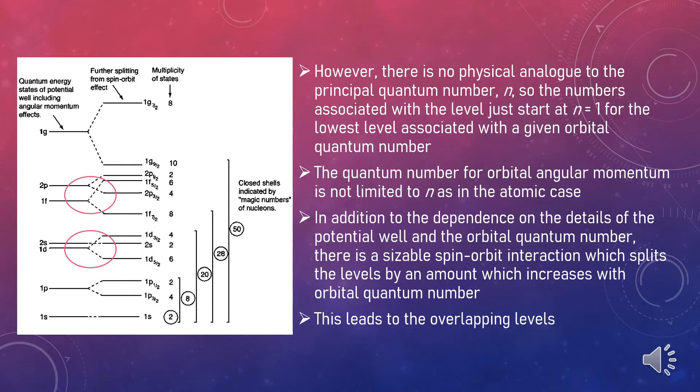However, there is no physical analogue to the principal quantum number n, so the numbers associated with the level just start at n equals 1 for the lowest level associated with a given orbital quantum number. The quantum number for orbital angular momentum is not limited to n as in the atomic case. In addition to the dependence on the details of the potential well and the orbital quantum number, there is a sizable spin-orbit interaction which splits the levels by an amount which increases with orbital quantum number. This leads to the overlapping levels that have been circled in the illustration.